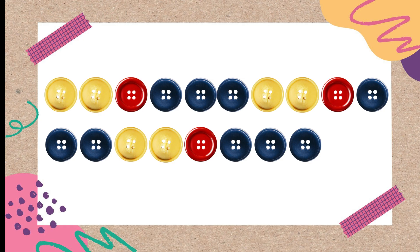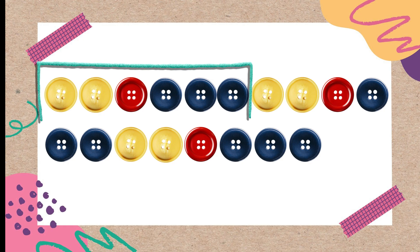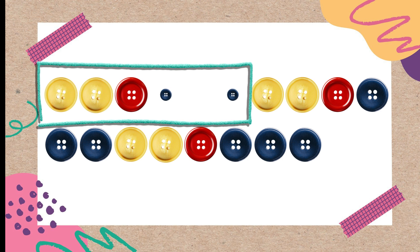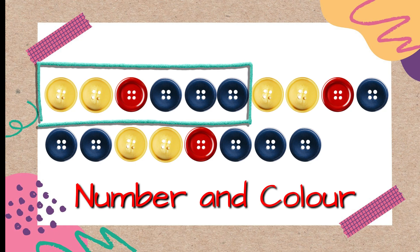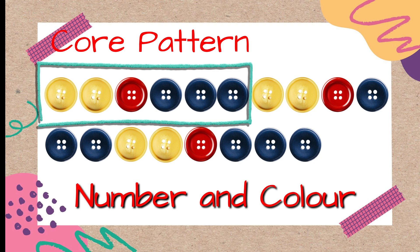Look at this example of different colored buttons. Can you tell what the changing attributes are here? Color is changing — can you find the other changing attribute? A red button is one, a yellow button is two, and a blue button is three. So number is also changing. The two changing attributes are number and color.